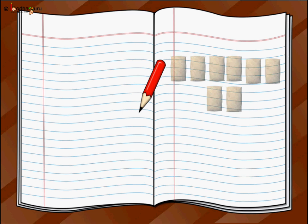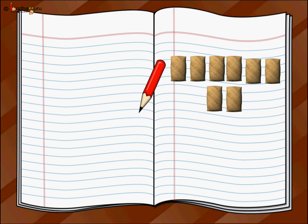Now let us take another example. Once a farmer had eight bags of rice which he wanted to divide amongst his two sons. So the problem is we need to divide eight by two. We write eight, then the left bracket and right bracket, and as we need to divide among two sons, we write two just before the left bracket.